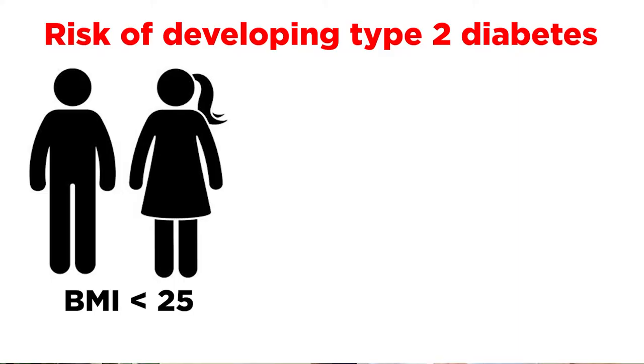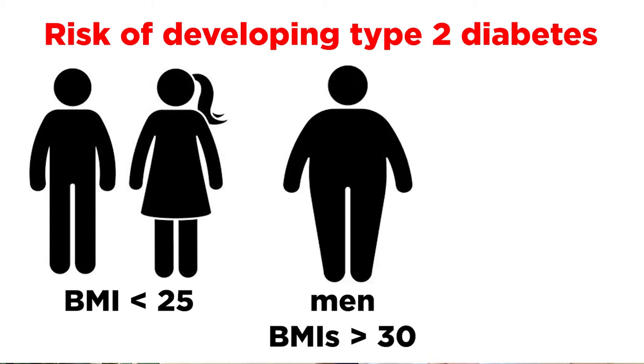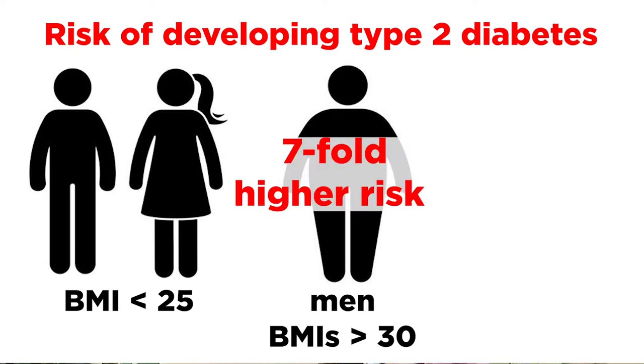Of the 18 weight-related diseases they studied, diabetes was at the top of the risk list. Compared with men and women in the normal weight range, men with BMIs of 30 or higher had a 7-fold higher risk of developing type 2 diabetes.